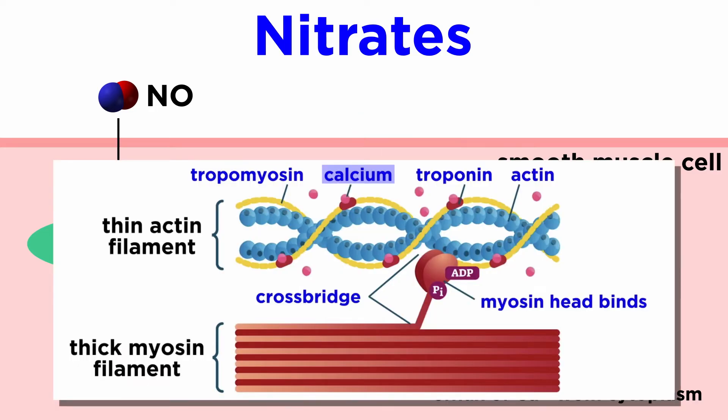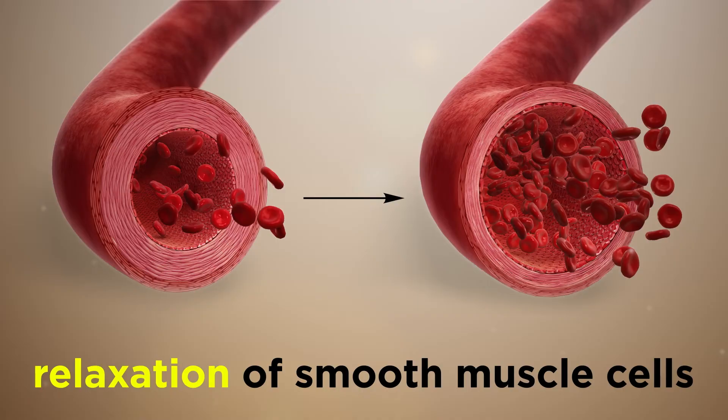With a reduction of cytoplasmic calcium, myosin light chain kinase can no longer phosphorylate myosin, and less cross-bridge cycling of smooth muscle contraction can occur. This leads to relaxation of blood vessel smooth muscle cells, and hence vasodilation.